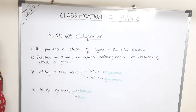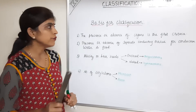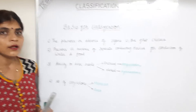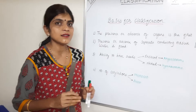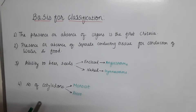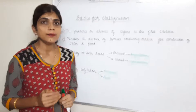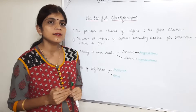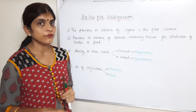Now let us proceed with the basis of classification of plants — which characteristics or criteria are considered while classifying them. The first is the presence or absence of organs, meaning root, stem, and leaves — whether the plant body has well-differentiated root, stem, or leaves. That is the extent of differentiation. Then comes the presence or absence of separate conducting tissue — tissue for conduction of water and food, that is xylem and phloem.